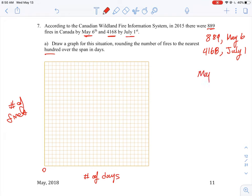So we can set that up as May 6th equals day zero. And on day zero, we had approximately 900 fires. So we'll just have to divide this up somehow.